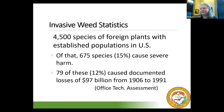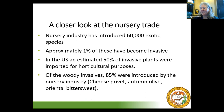A few invasive weed statistics from the Office of Tech Assessment: there are approximately 4,500 species of foreign plants with established populations in the U.S., and about 15% of those plants cause severe harm, causing about 97 billion dollars in documented losses from 1906 to 1991. In the nursery industry, it's estimated that 60,000 exotic species have been introduced into the trade and about 1% of these become invasive over time. In the U.S., it's estimated that 50% of our invasive plants were brought here for horticultural purposes, and about 80% of our woody invasives — like Chinese privet, autumn olive, and oriental bittersweet — were introduced by the nursery industry.